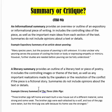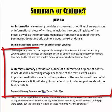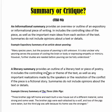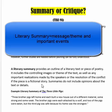A literary summary, although it is a summary, is very different from an expository summary. A literary summary provides an outline of a literary text or piece of poetry. It includes the controlling images or theme of the text as well as any important realization made by the speaker, or the resolution of the conflict if the piece is a fictional story. Summaries do not include opinions about the text or details.